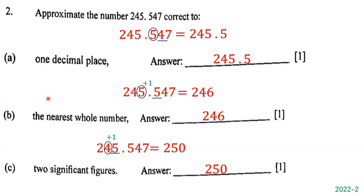Now we want to approximate 245.547 correct to the nearest whole number. We circle the number in the ones place, which is 5, then underline the number to its right, which is 5 again. Since 5 or greater means we round up, we add 1 to 5, giving us 6. We drop the numbers to the right of the decimal point, so the answer is 246.